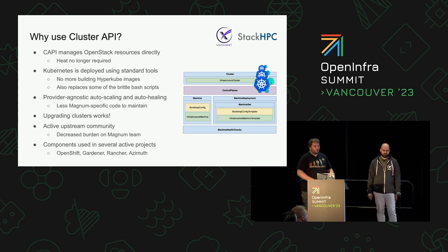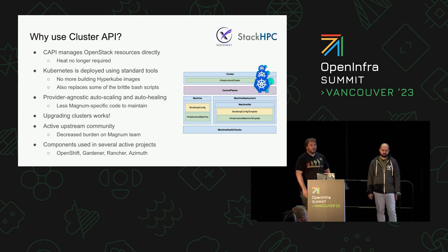There's a really active upstream community around all of these components, which decreases some of the burden on the Magnum core team. And these components are used in lots of other projects as well — things like OpenShift, Gardner, Rancher, and Azimuth.